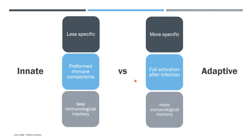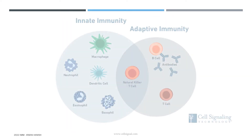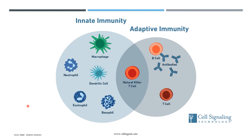Unlike innate immunity, the adaptive immune response is only fully activated after we meet the pathogen. The third difference is that innate immunity generally doesn't memorize the pathogens it fights against. In contrast, adaptive immunity has quite a distinctive immunological memory, and because of this memory, it becomes better at attacking when it fights the same pathogen again. You'll also notice that certain cells are more active in one type of immunity — macrophages and neutrophils are prominent in innate immunity, while T cells and B cells dominate adaptive immunity, though some cells appear in both.